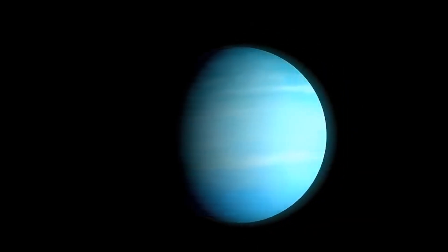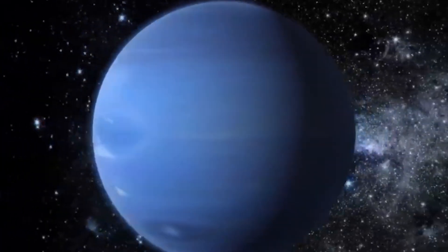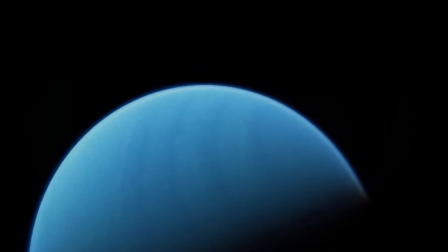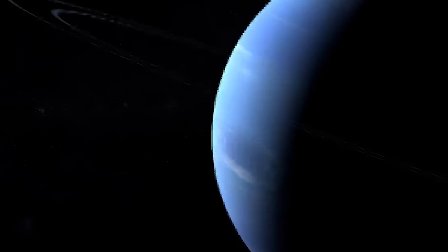Neptune is enormous, about four times wider than Earth. Its radius measures approximately 15,300 miles, and it's large enough to fit 58 Earths inside.